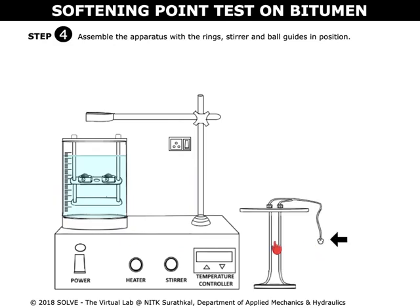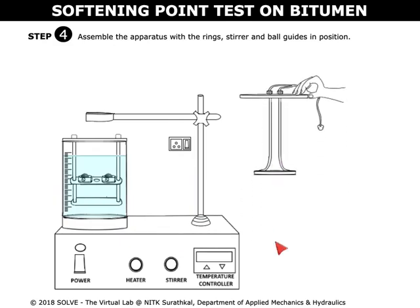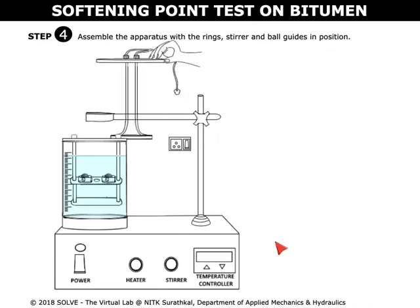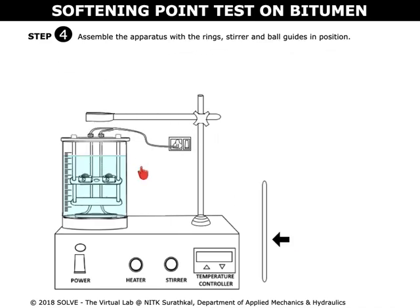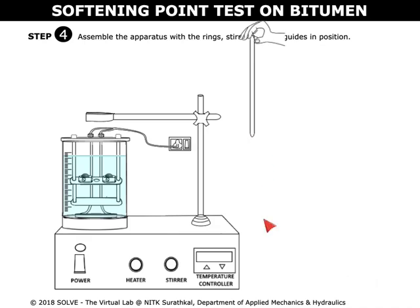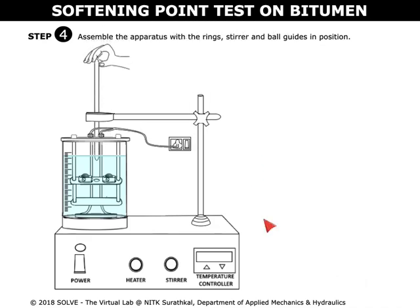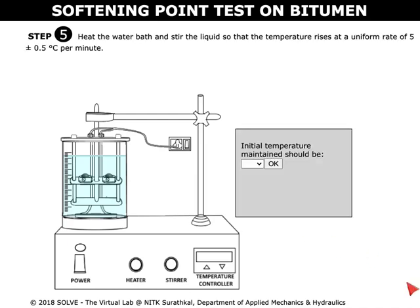Now click on the heater to place it in its position and plug in the heater. Now click on the stirrer to place it in its position in the apparatus. Select the correct answer to proceed to the next steps.